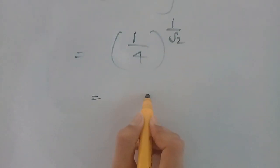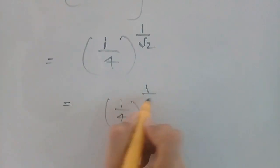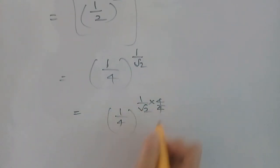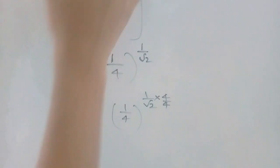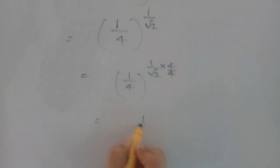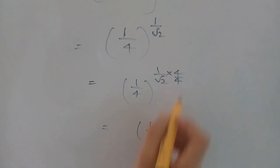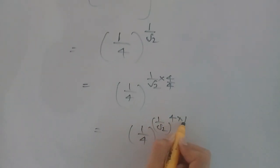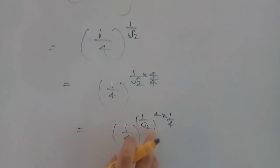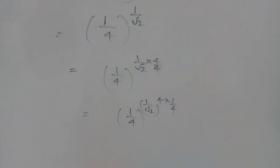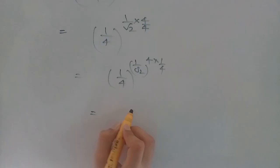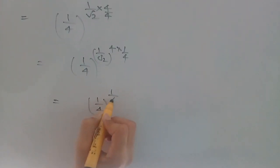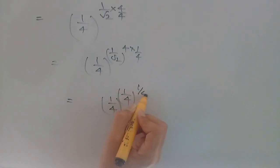So we have 1 by 4 whole power 1 by root 2. We can write 1 by root 2 as 4 by 4 times 1 by root 2 — same way as we wrote 2 by 2 earlier. That gives 1 by 4 whole power, with the exponent split as 1 by root 2 whole power 4, times 1 by 4. Now 1 by root 2 whole power 4 is 1 by 2, so we get 1 by 4 into 1 by 4 whole power 1 by 4.